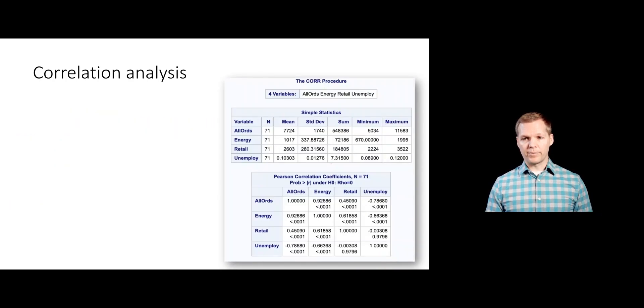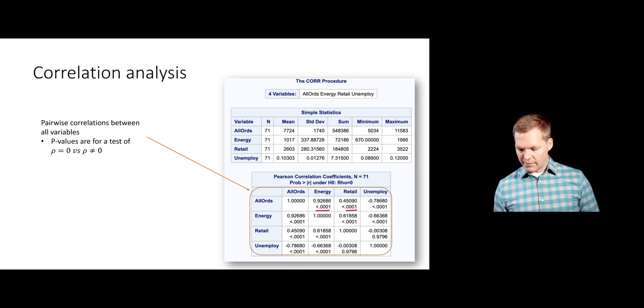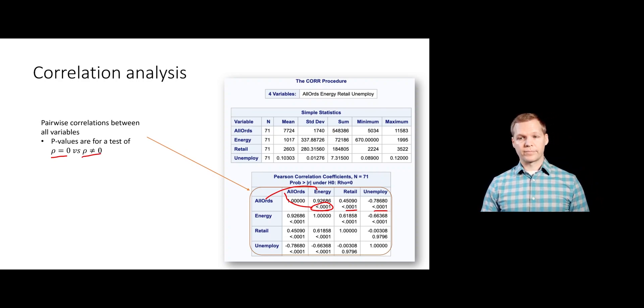Here's the rest of the output that you get from PROC CORR. The top part is just some summary stats, which are useful, but not really what we're going after in this case. But down here, this is where you'll actually get your p-values for different tests. You might notice that there is a p-value associated with every combination of our variables. Between all ords and energy, this p-value right here is representing the test of whether or not that correlation is significantly different from zero. All of these tests are doing a test of whether that correlation is zero or whether it's not equal to zero.